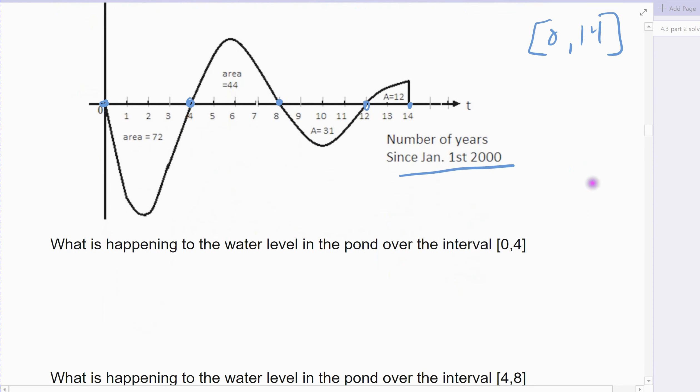So the first question is, what's happening to the water level over the interval 0 to 4? So 0 to 4 would be this region here. This would be the 0 to 4 region. Over 0 to 4, there is a loss because it's below. The water level is decreasing because the derivative is negative, and we know exactly how much it decreased by.